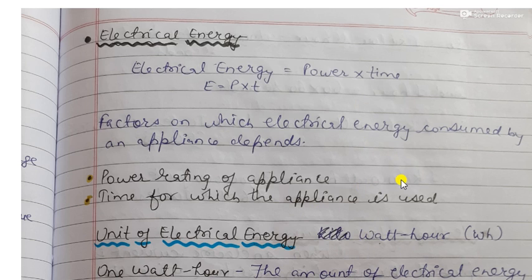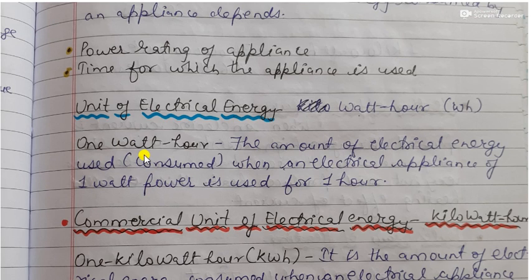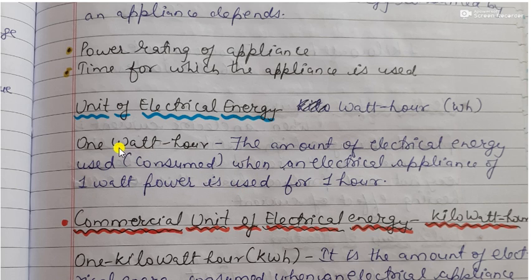The unit of electrical energy is watt-hour, because the unit of power is watt and the unit of time is hour. So watt-hour is the unit of electrical energy. One watt-hour is the amount of electrical energy consumed when an electrical appliance of 1 watt power is used for 1 hour.